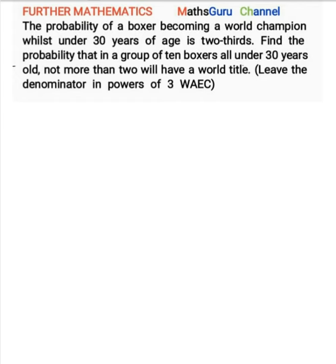We are going to highlight some important words or groups of words here. First, we have the probability that a boxer will become a world champion — two-thirds. And the number of trials: we have 10 boxers. And then we have 'not more than two will have a world title.'